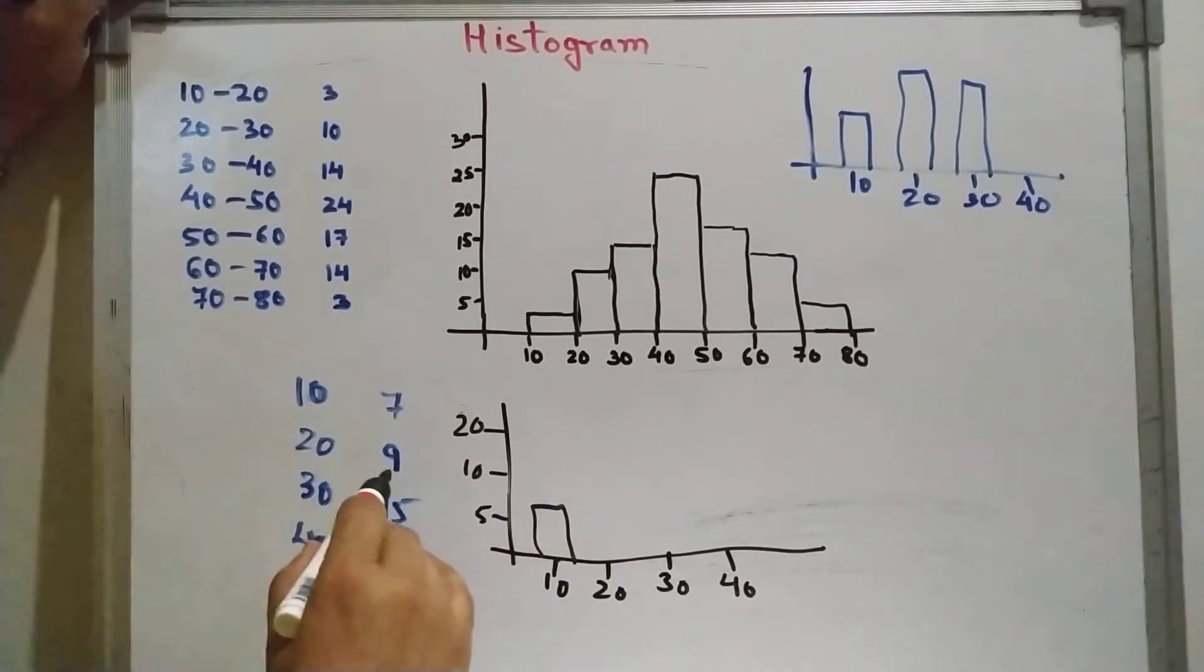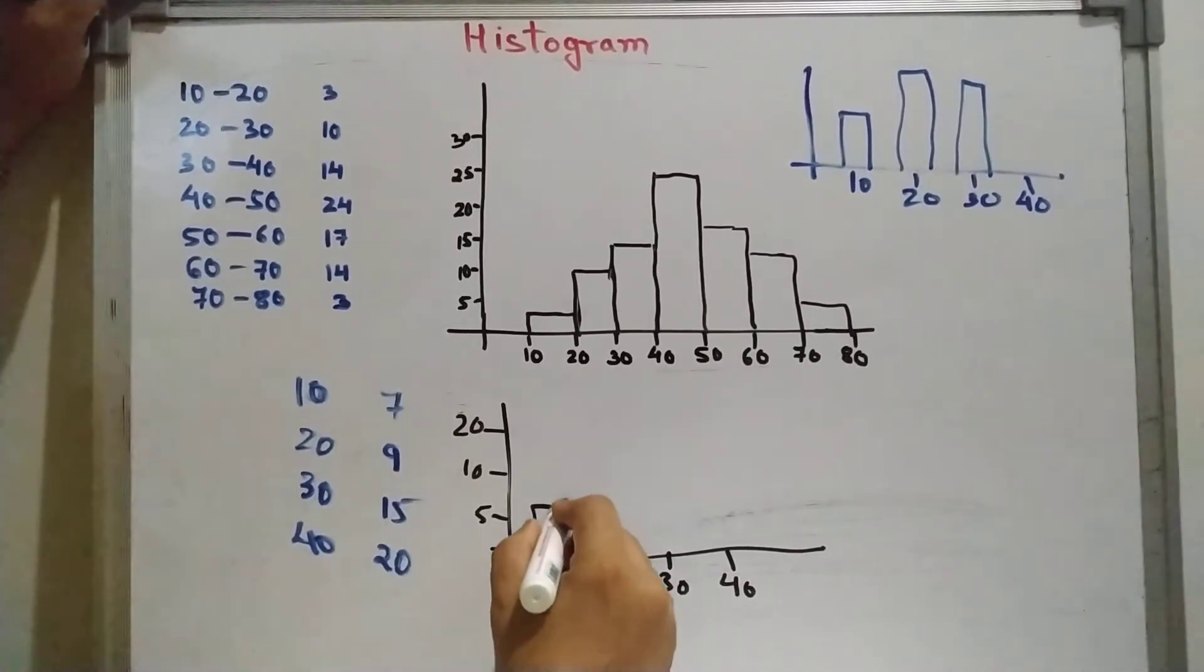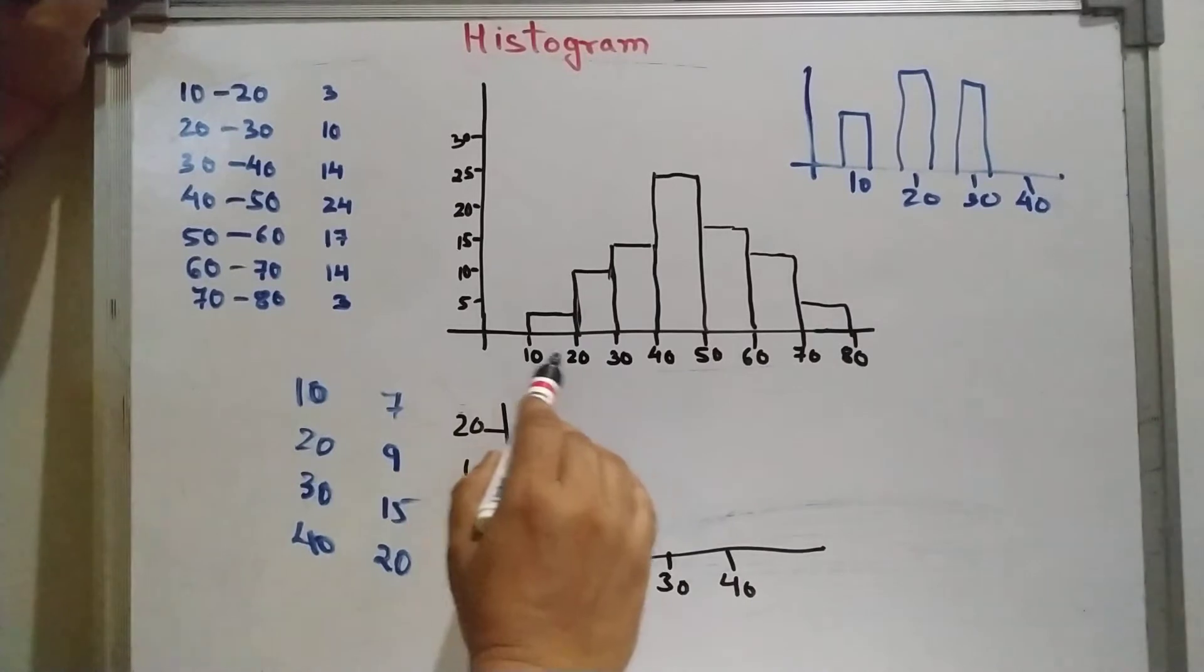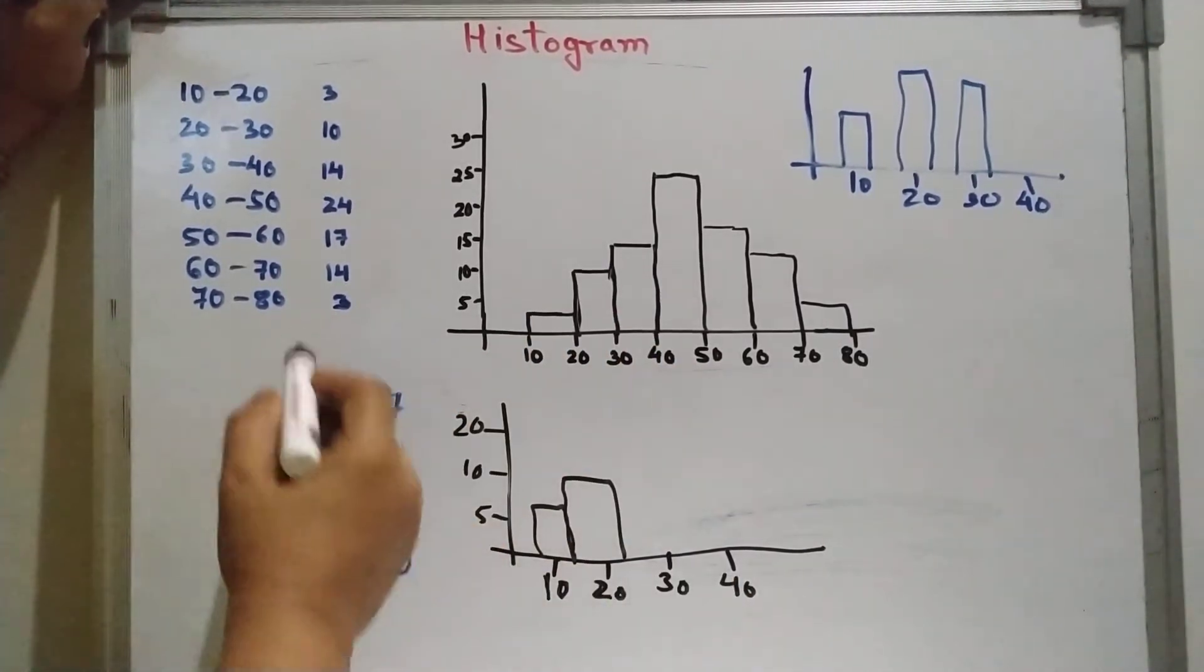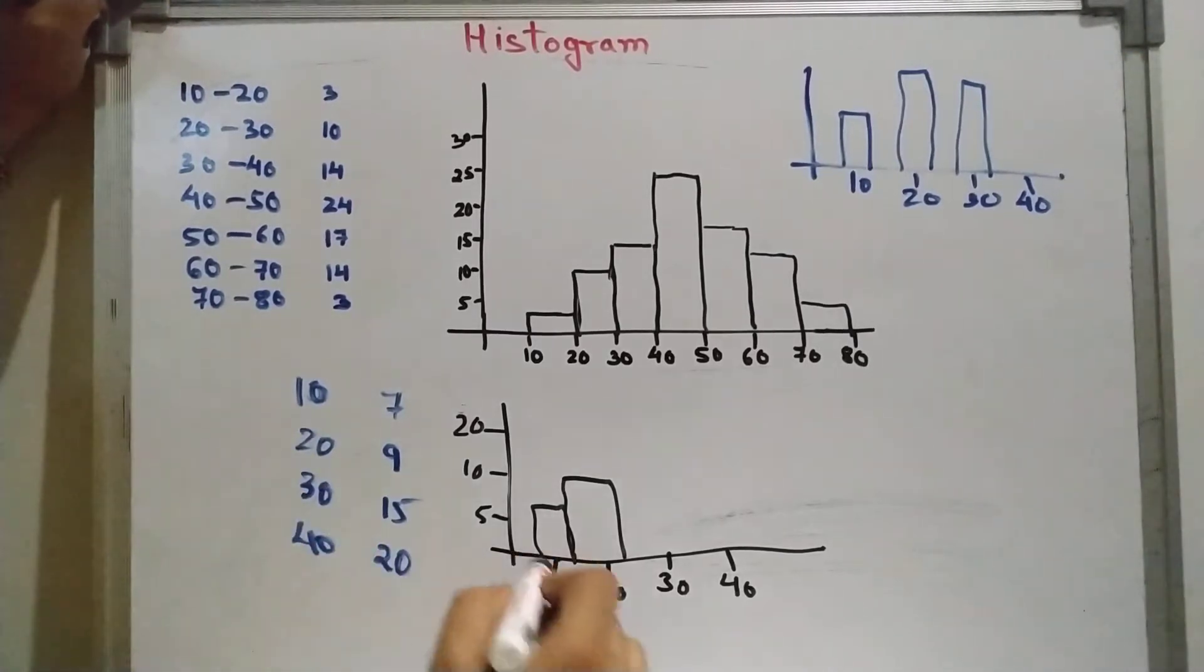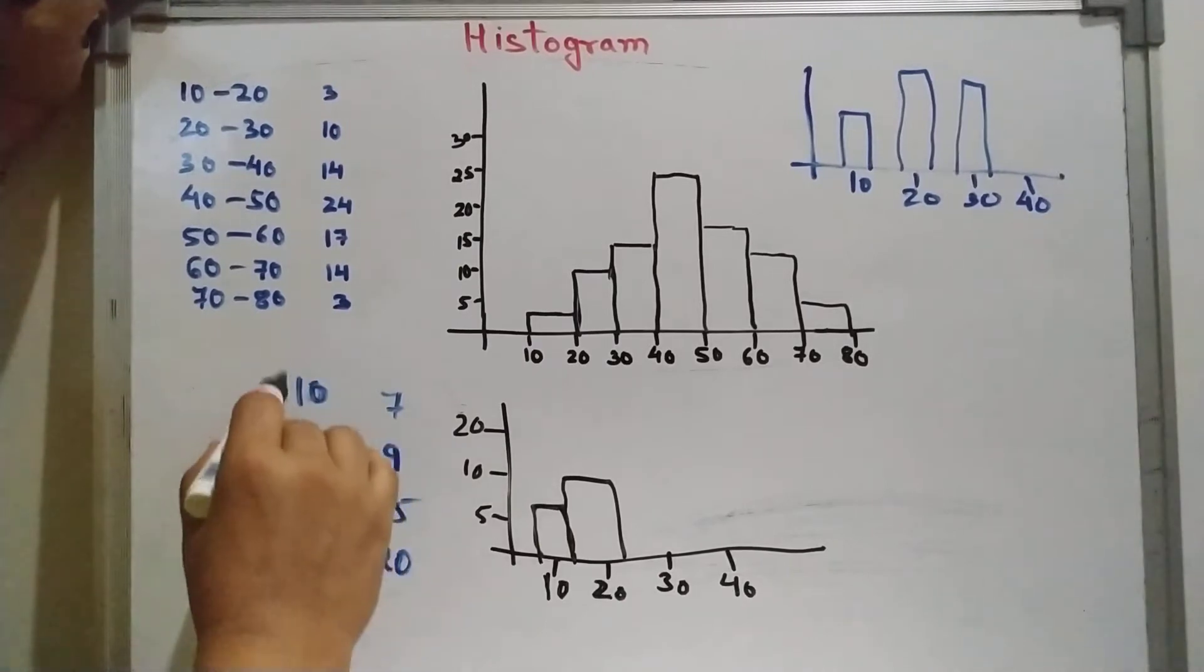Then for 20, it is 9. So from here we raise up to 9 and then put in the middle of these two. We take 10 as a mid value, here 20 as a mid value, and then we are plotting. Look here the difference is 10 to 20, 20 to 30. But here though it is a discrete value, we can plot histogram. But in this way we have to take these values as a mid value.